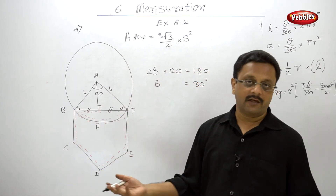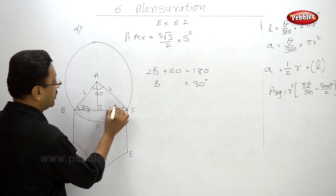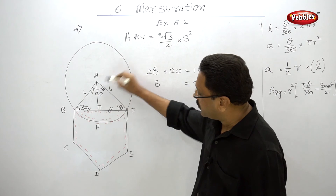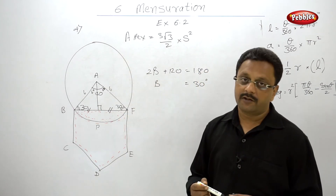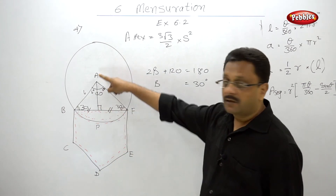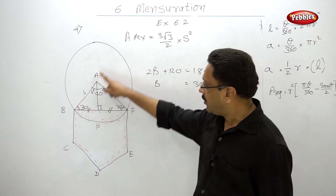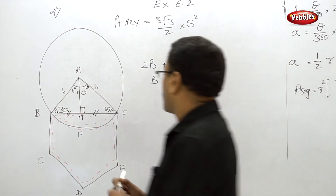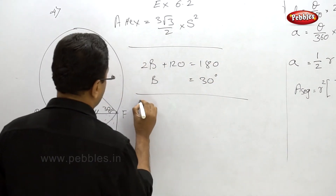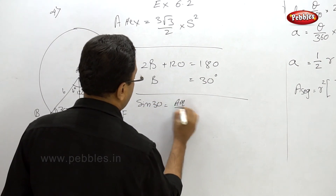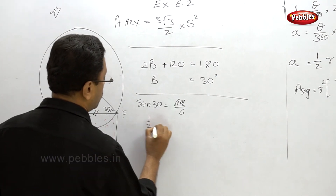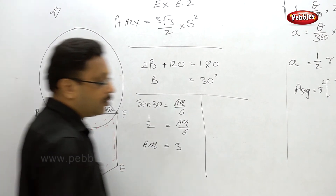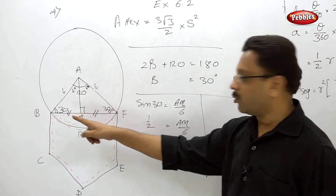Since b = 30 and it is an isosceles triangle, both base angles are 30 degrees. This gives us a 30-60-90 triangle. Naming the foot of the perpendicular M, we apply sin 30 = AM / hypotenuse = AM / 6. Since sin 30 = 1/2, we get AM = 3. To find the base, we apply cos 30 = BM / 6. Since cos 30 = √3/2, we get BM = 3√3.